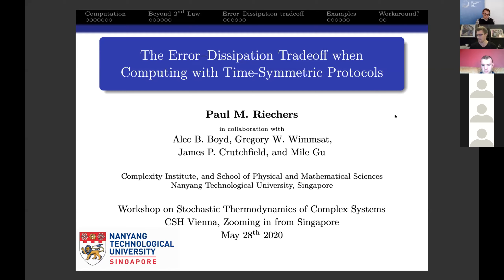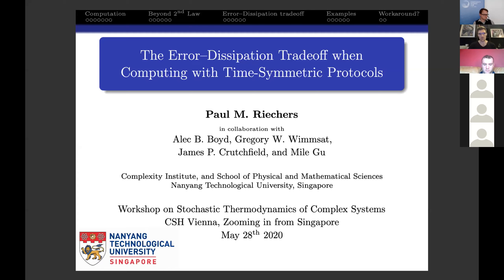My talk isn't actually about thermodynamic uncertainty relations per se, but it'll have a similar spirit in that we're talking about a trade-off between dissipation and reliability. In particular, if you want to compute reliably and you're using a time-symmetric protocol, it turns out there's a divergent dissipation as you require more and more precision. The ways we've come up with this result are quite interesting, and the final result might actually be quite important to real computers.